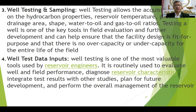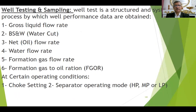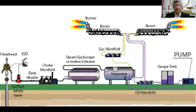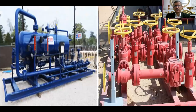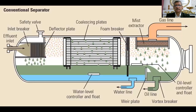Well testing and sampling — well test data inputs. Well testing and sampling includes these figures: gross liquid flow rate, BSWW, net oil, water flow rate, formation gas flow rate. All of these should be obtained during the well testing. This is the well test package, this is the choke manifold, this is the separator and what it includes inside. This is a conventional separator.